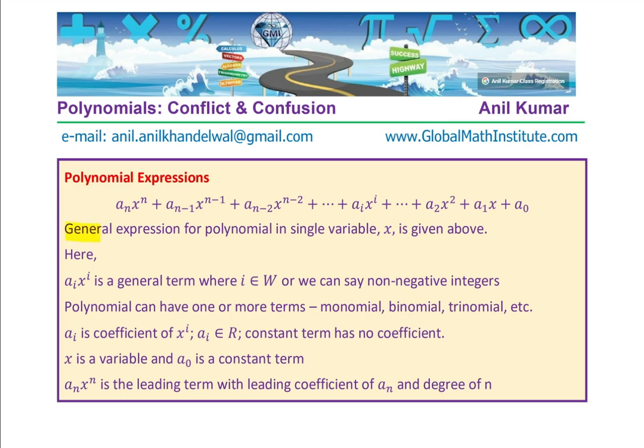What I have written here is a general expression for polynomials, and that too in single variable. Polynomials can have more than one variable. So we are keeping it absolutely simple in one variable x. X is my variable in which I have given the definition general term of polynomial expression. In this expression the general term is written as a_i x^i. So a_i x^i is the general term where i is the index.